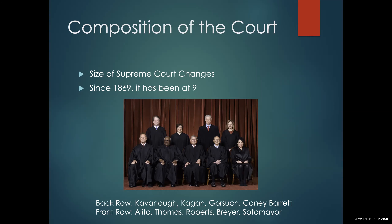Right now we have nine justices. Justice Kavanaugh is a Trump appointee. Justice Kagan is an Obama appointee. Justice Gorsuch is a Trump appointee. Justice Coney Barrett is a Trump appointee. Justice Alito is a Bush appointee — specifically the second Bush. Justice Thomas has been around for quite some time; he was appointed by the elder Bush when the speaker was in law school. Justice Roberts was appointed by George W. Bush. Justice Breyer was a Clinton appointee, and Justice Sotomayor was an Obama appointee.